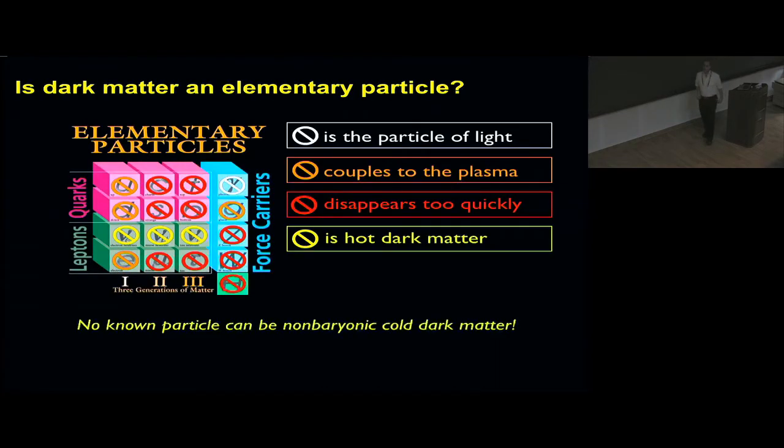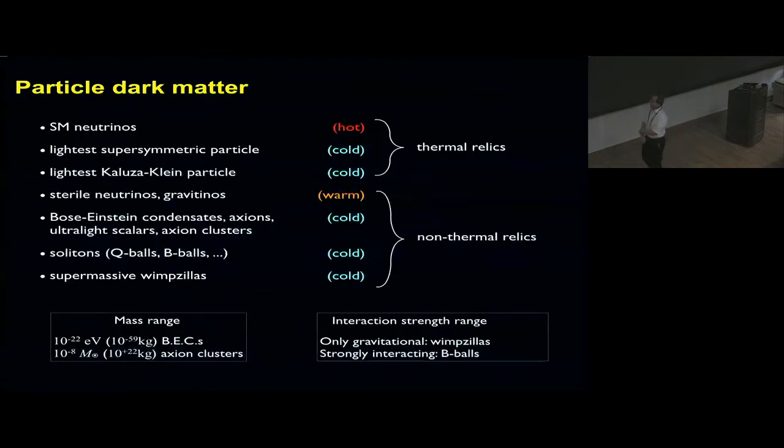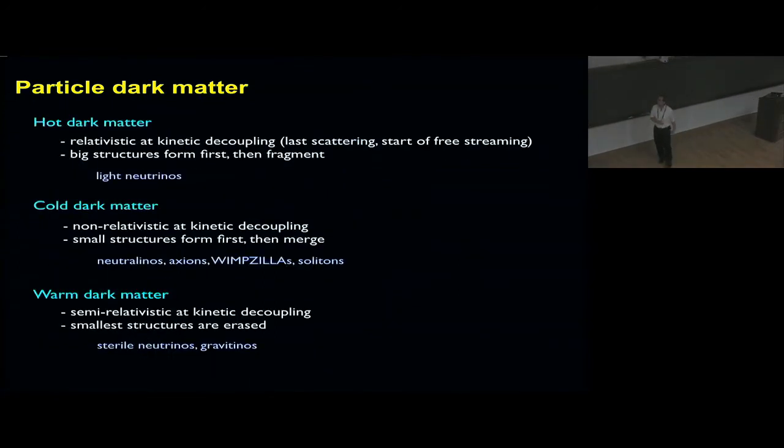The question is, what is non-baryonic cold dark matter? Because no particle in the standard model is a good candidate. It either couples to the plasma or decays too fast, or it's hot dark matter like the case of the neutrinos. There are many candidates available, and unfortunately, the mass range and the interaction range are huge. The interactions that have been proposed go from only gravitational to the strong interactions, and the mass range goes from 10^-59 kilograms to up to 10^22 kilograms.